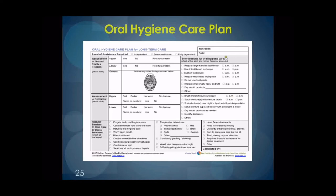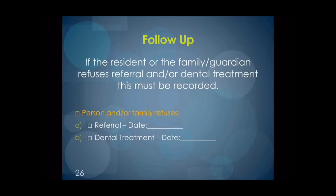The top left area of the care plan can be completed using information collected from the OHAT. The lower portion outlining the barriers should be completed with input from caregivers who work regularly with the client or resident. The top right section would require input from a dental professional or a caregiver with specialized dental training. The follow-up completes the case management process. If the resident or family refuses referral and/or dental treatment, this must be recorded.